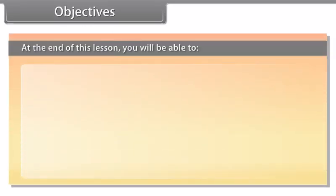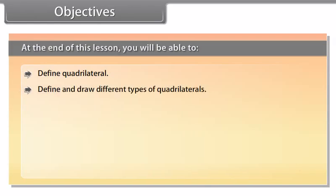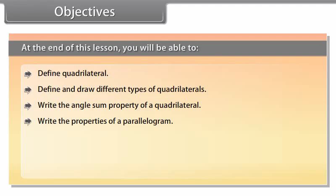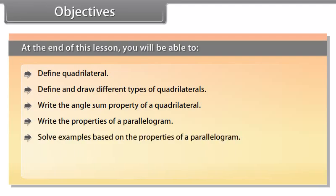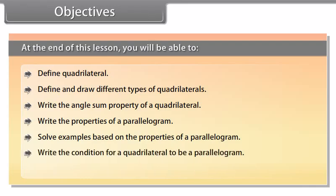Objectives: At the end of this lesson, you'll be able to define a quadrilateral, define and draw different types of quadrilaterals, write the angle sum property of a quadrilateral, write the properties of a parallelogram, solve examples based on the properties of a parallelogram, write the condition for a quadrilateral to be a parallelogram, and prove the midpoint theorem.